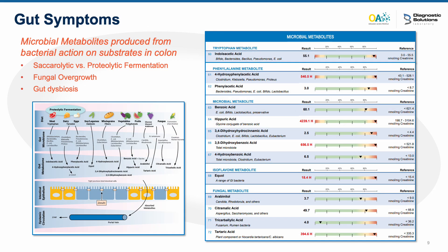And finally, so many of our patients have gut symptoms. In that case, you will likely want to run a GI map, but the OAP can provide complementary insight into gut dysbiosis and offers an entire section of gut microbial metabolites, which illustrate bacterial or fungal overgrowth.